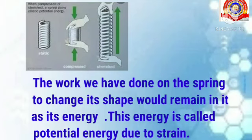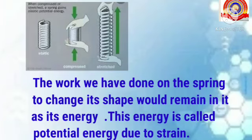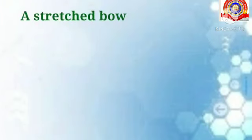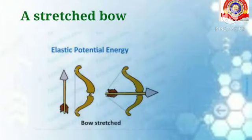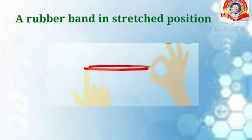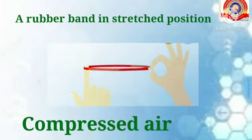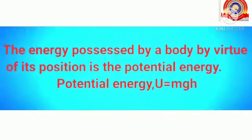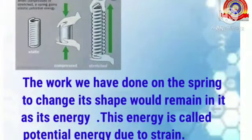The work done on a spring or any similar object to change its shape remains in it as potential energy — this is called potential energy due to strain. Some examples are a stressed bow, a rubber band in a stressed position, and compressed air. Today we studied about two types of potential energy: potential energy due to position and potential energy due to strain. I hope you all understood this topic. Thank you for watching, see you in the next video.